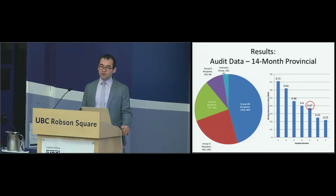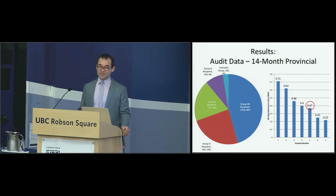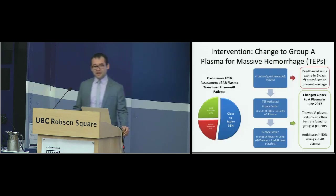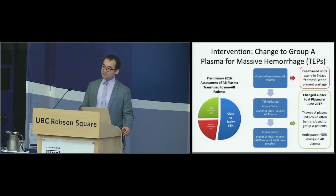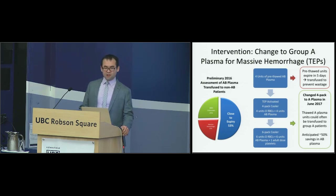When we benchmarked our hospital against six other hospitals in BC, we were on the lower end of appropriateness for the ABAI. We found we only transfused about a third of our AB Plasma to AB patients. Since we're one of the larger users, we were probably dragging down the overall average for BC. So we intervened and changed to group A Plasma for our trauma exsanguination protocols.